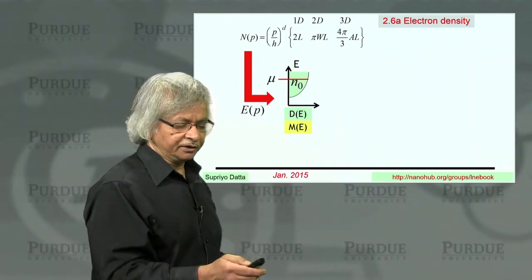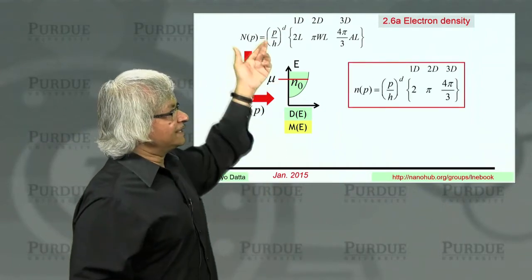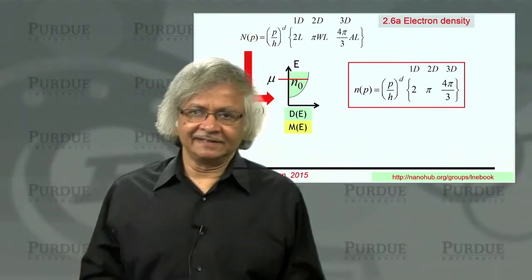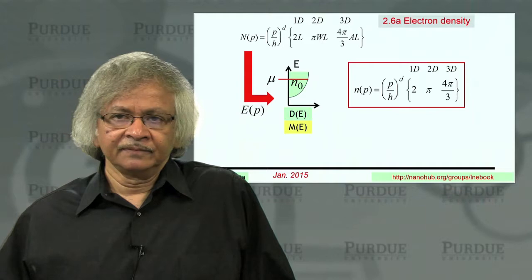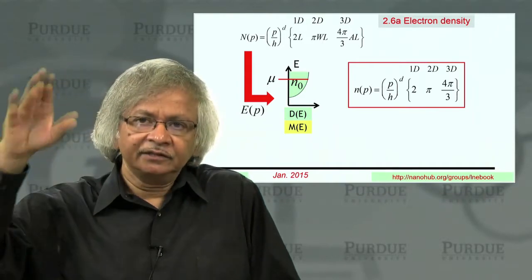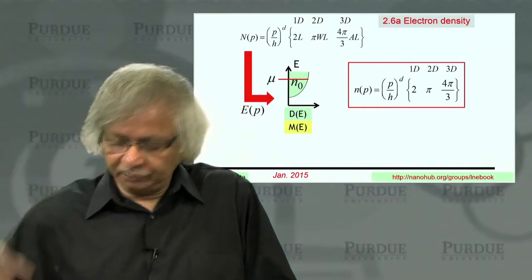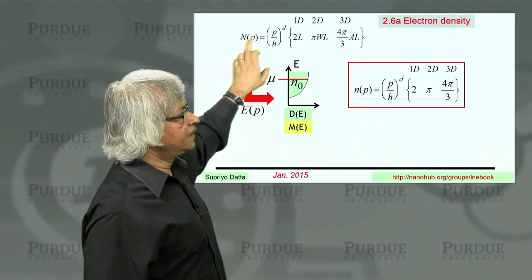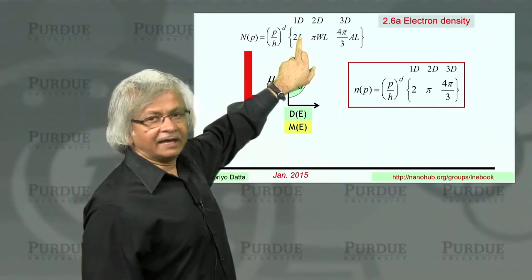Let me explain a little further. So this is the total number of states. Now, if you want electron density, then you usually talk about number of electrons per unit length or per unit area or per unit volume.